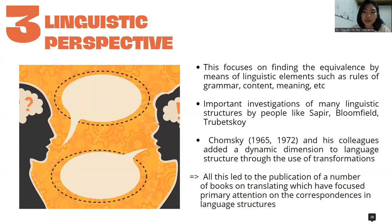Because translating usually includes at least two different languages, it was unavoidable that many people investigating translation challenges were focused on the differences between the source and receptor language. Important investigations of many linguistic structures were conducted by people like Sapir and Trubetzkoy. Chomsky and his colleagues added a dynamic dimension to language structure through the use of transformations.